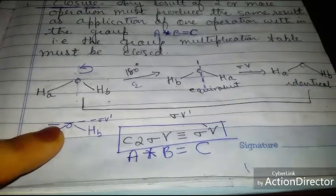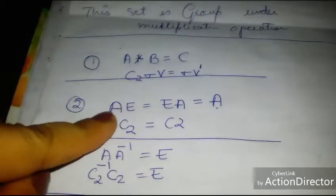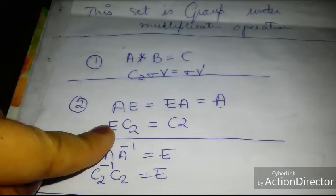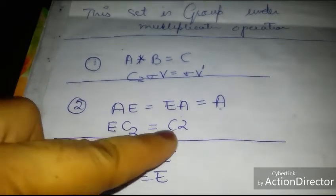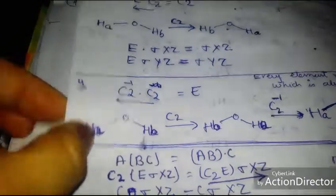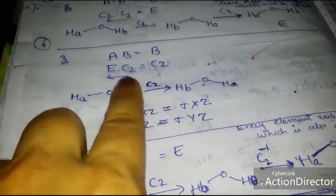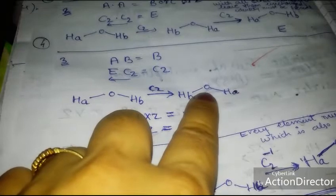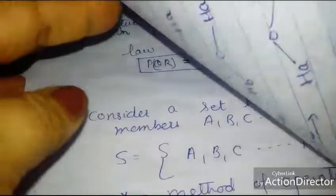The second property is identity: A × E = E × A = A. In terms of operations, applying identity followed by C2 should give C2. For water labeled HₐOH_b: applying C2 first interchanges Hₐ and H_b giving H_bOHₐ, then multiplying by E gives the same result — which is nothing but C2. This demonstrates the identity property.